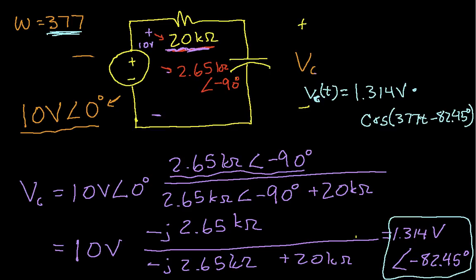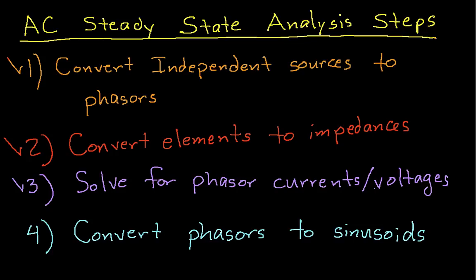We talked about the steps to do AC steady state analysis. And as you can see, steps one, two, and four are easy. Step three, we basically take what we've already learned in terms of solving circuits and use it to solve for phasor currents or voltages.